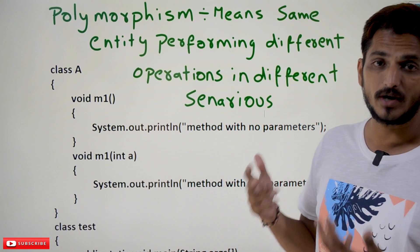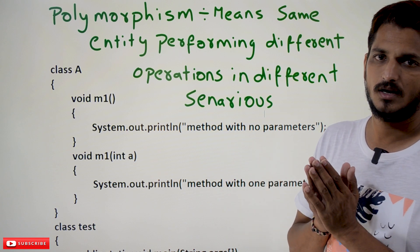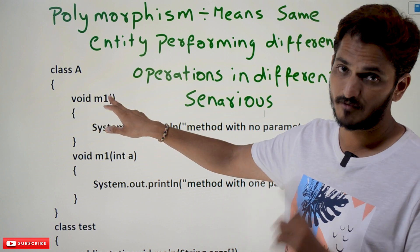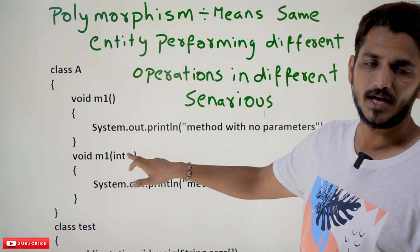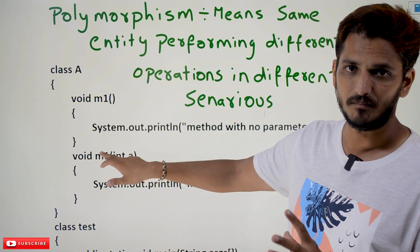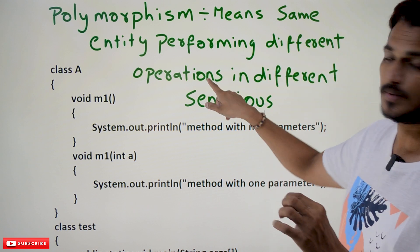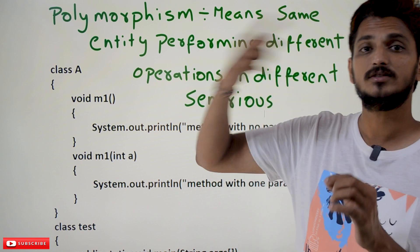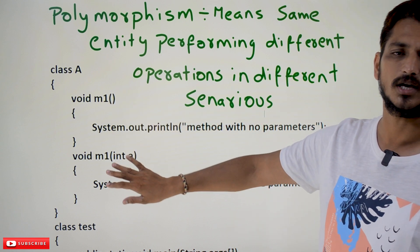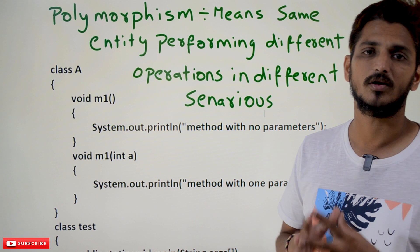In Java, we are going to provide polymorphism using method overloading. We will understand with an example: void m1() — this is a method, m1 is a method. Void m1(int a) — m1 is also a method. Same entity, methods consisting of the same name, but working in different operations, performing different operations in different scenarios. This is implementing one logic, this is implementing another logic. Same name working differently in different scenarios — we call it as polymorphism.